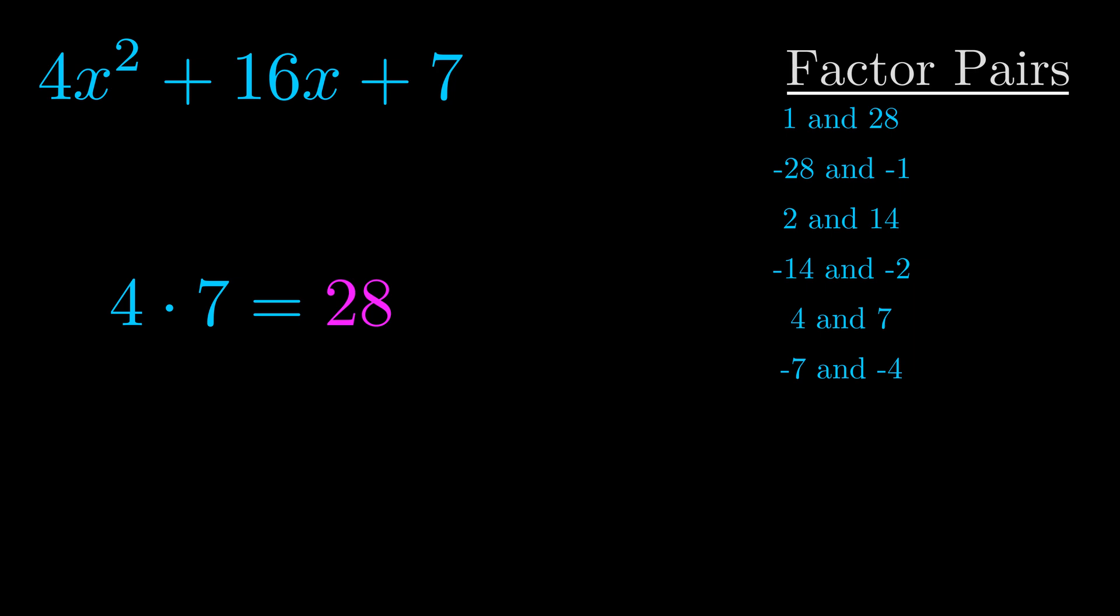The b value is the coefficient on the x term. That's the middle term, the one that we haven't done anything with yet. And really this is the only factor pair that we need.